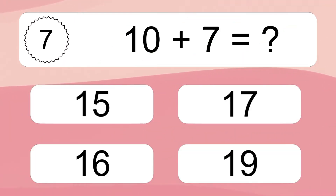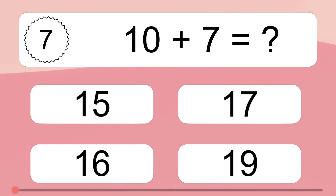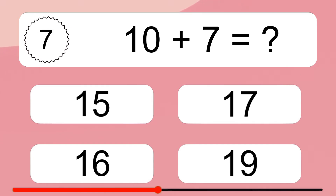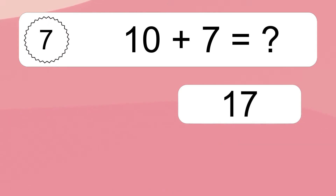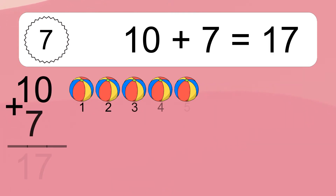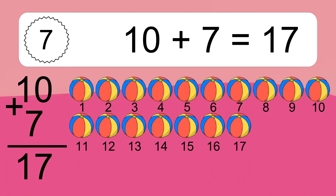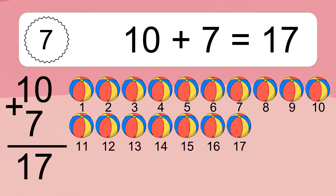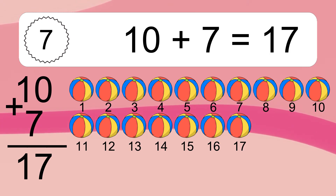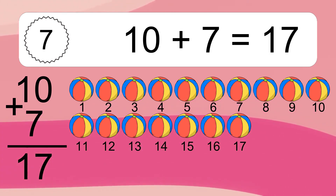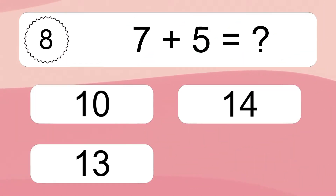10 plus 7 equals what? 10 plus 7 equals 17. Let's count it: 1, 2, 3, 4, 5, 6, 7, 8, 9, 10, 11, 12, 13, 14, 15, 16, 17.